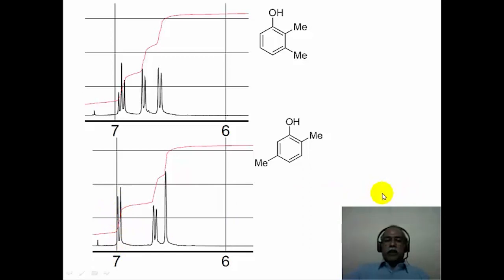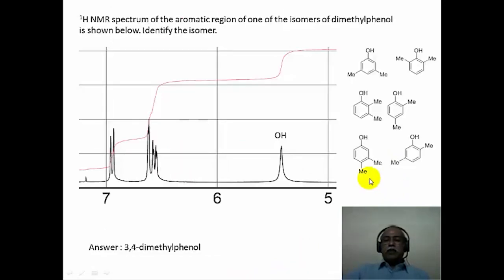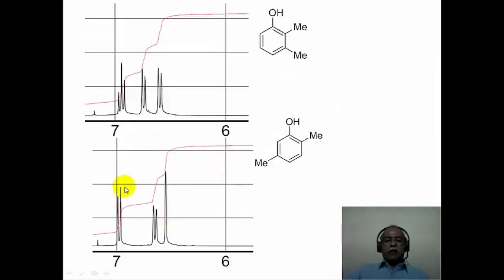If one can recognize these patterns properly, it is possible to distinguish between the various isomers of aromatic compounds purely based on simple first-order analysis, because most of these patterns look like a first-order pattern. For example, the doublets look almost equal intensity, although there is a small roofing effect still seen in the spectra. One can afford to use a first-order kind of treatment to analyze this spectrum.